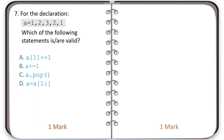Question number seven: see the declaration of tuple A and identify which of the following statements are valid. The correct option is option D. The expressions given in options A, B, and C are invalid.